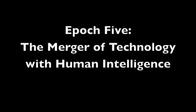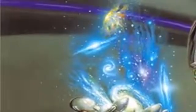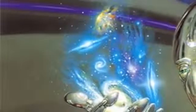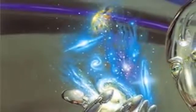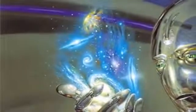Epoch 5: The merger of technology with human intelligence. Looking ahead several decades, the singularity will begin with the fifth epoch. It will result from the merger of the vast knowledge embedded in our own brains with the vastly greater capacity, speed, and knowledge-sharing ability of our technology.